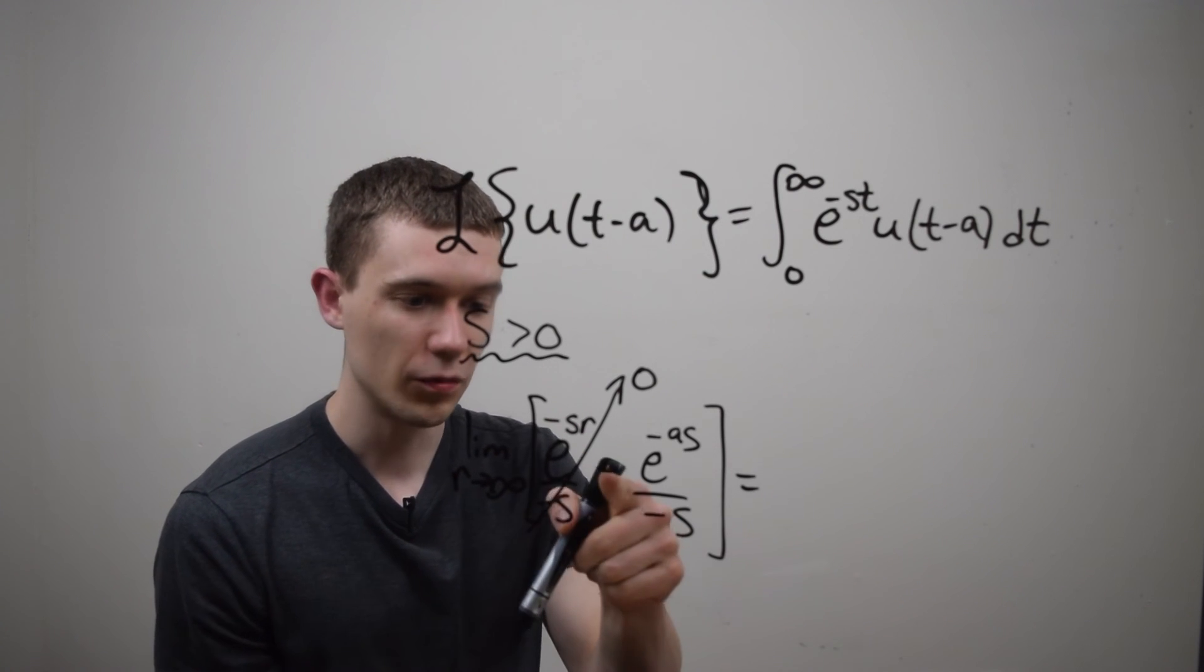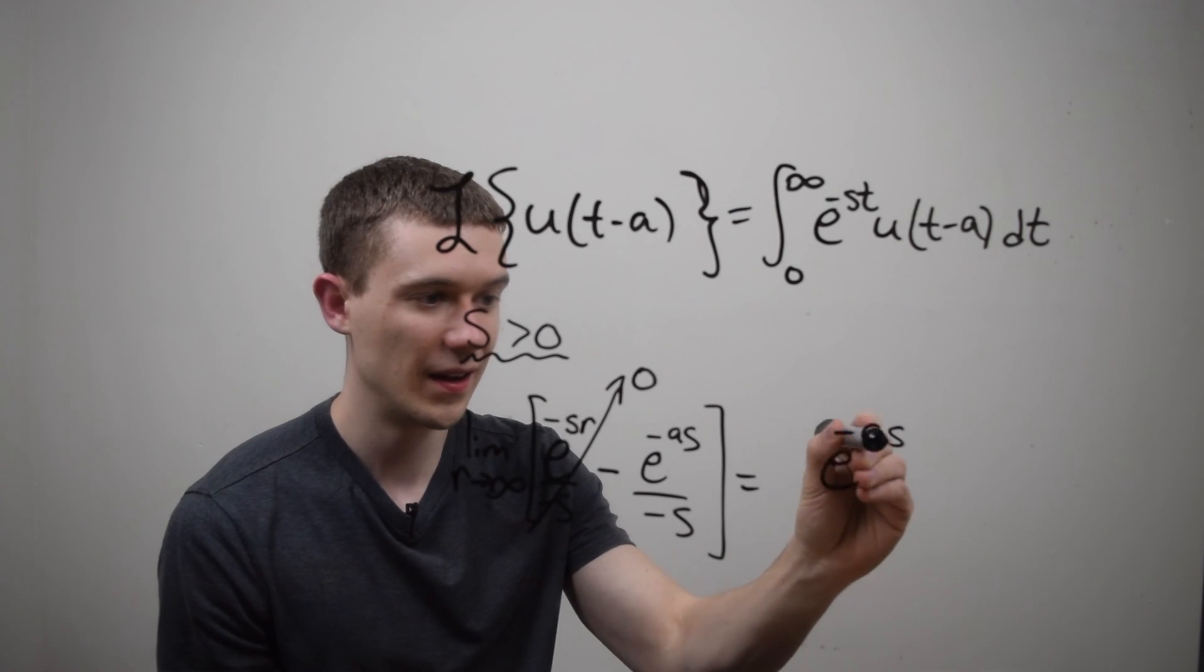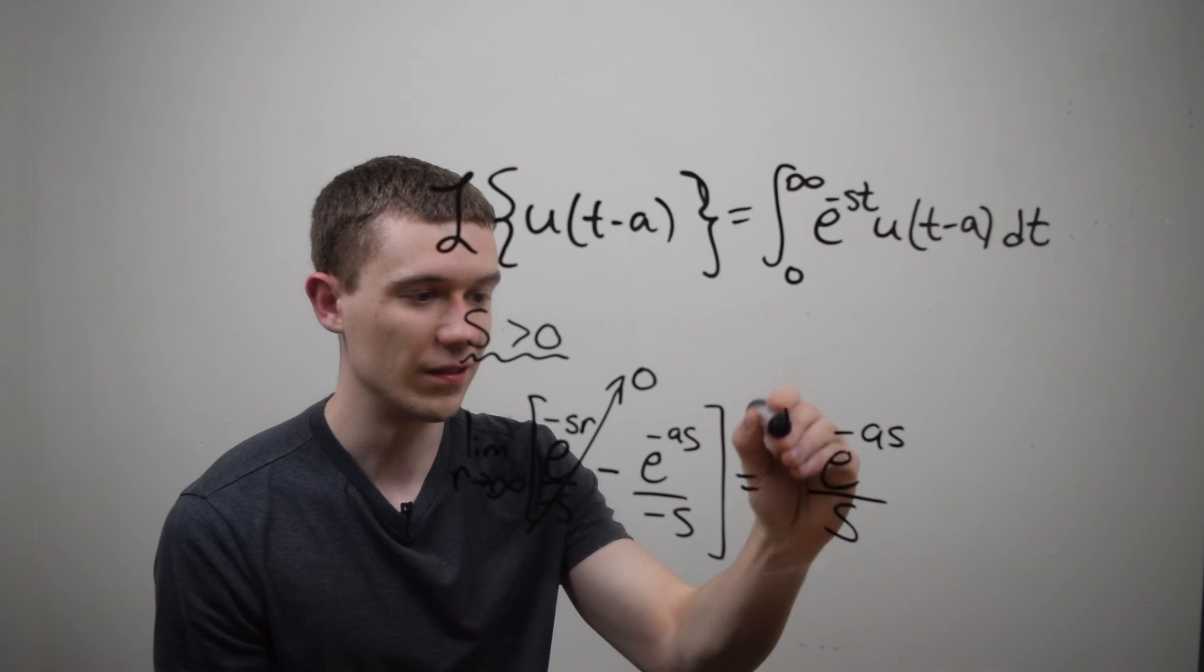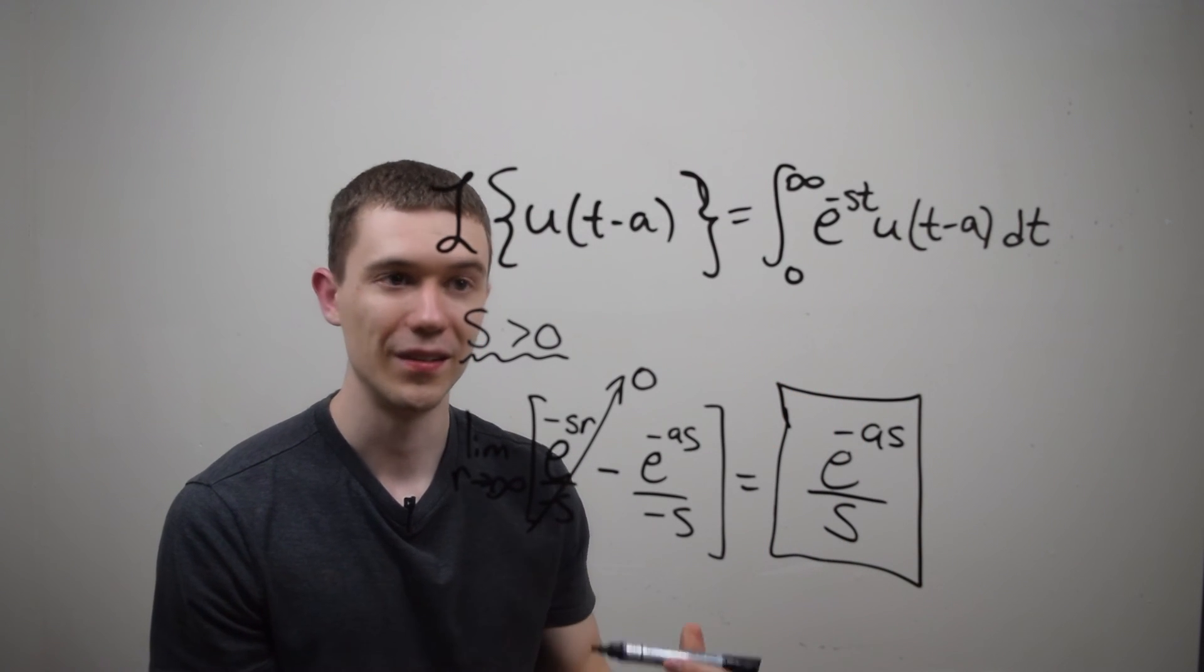And what am I left with? Well, minus and minus will be a plus and I'll just have e to the minus as over s. This is the Laplace transform of the unit step function t minus a.